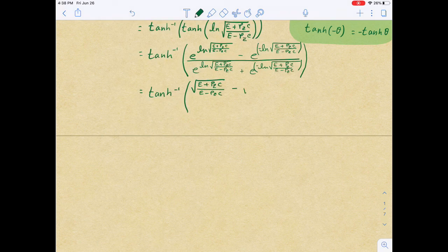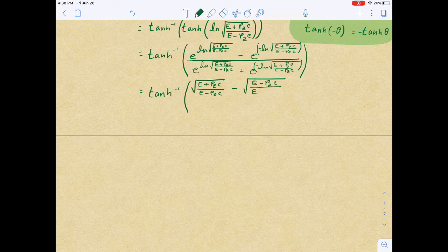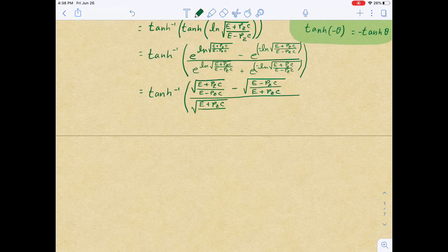So, I will go ahead and use that. So, this becomes square root of, now that gets flipped, so we have E minus pzc divided by E plus pzc, whole thing divided by same expression as the numerator, but we will just have a plus instead of a minus in the middle.